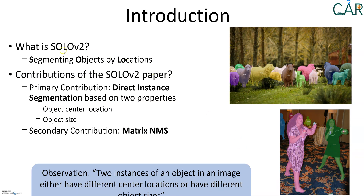The authors of SOLO V2 aim to improve instance segmentation. SOLO stands for Segmenting Objects by Locations. The authors make an important observation based on the COCO dataset: in 97% of images, two instances of an object either have different locations or different sizes. These two properties — location and size — are used in the SOLO method for instance segmentation. The secondary contribution is a new method to improve non-maximal suppression, called Matrix NMS.